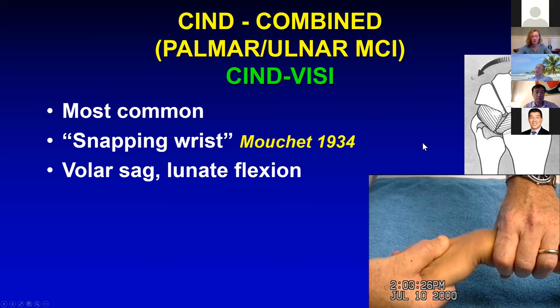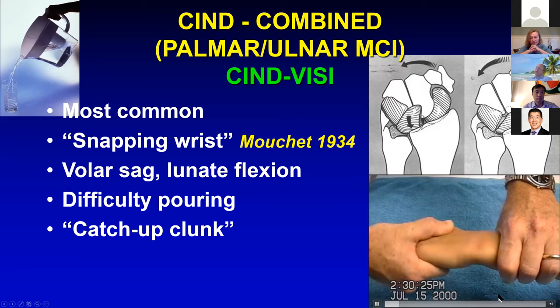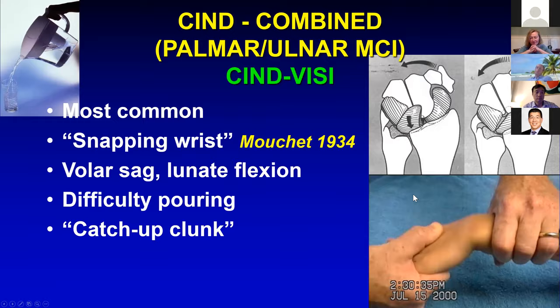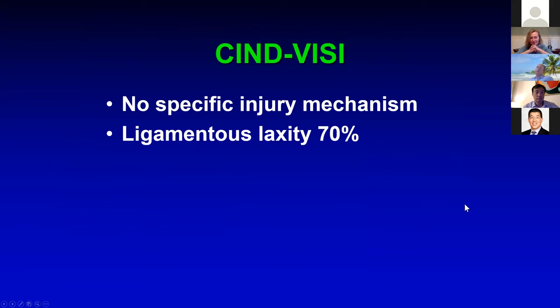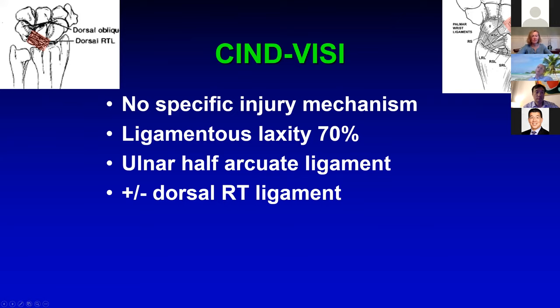CIND-VISI is the snapping wrist described by Boucher in 1934. It's characterized by the volar sag Lori pointed out earlier, a lunate flexion or VISI deformity. People have difficulty pouring without their proximal carpal row popping. Lichtman described the catch-up clunk. This is actually my son when he was seven or eight — you can see his entire proximal row clunking back and forth very easily due to childhood ligamentous laxity. Most of these patients have ligamentous laxity — 70% of CIND-VISI have severe ligamentous laxity.